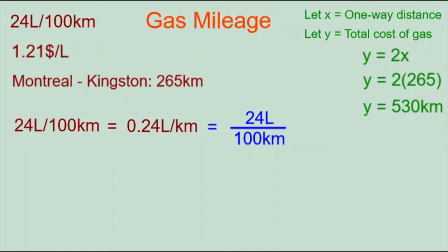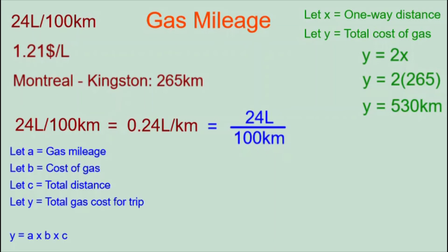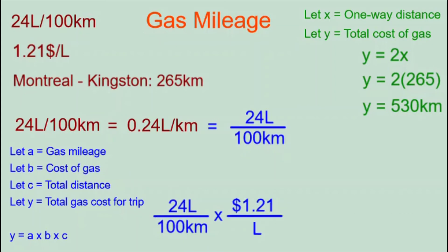Now let's calculate the total cost of gas using an algebraic model. Define: a as gas mileage, b as the cost of gas, c as the total distance, and y as the total gas cost for the trip. The model becomes y = a × b × c. A is 24 liters over 100 kilometers expressed as a fraction. B is $1.21 per liter, also expressed as a fraction with liters on the bottom. C is the 530 kilometers we calculated from our earlier algebraic model.